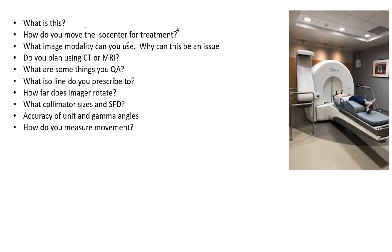What image modality can you use? You can plan on and use MRIs, but watch for geometric distortion, especially at the periphery. The Icon has a cone beam CT attached to it on this little arm right here. Do you plan using CT or MRI? MRI gives no heterogeneity correction, but since the brain is so close to water, that is okay, and there's only about six millimeters of skull. You can use MRI, you can use CT, or a combination of both. Know not just that you can use MRI, but why — because there's not much heterogeneity in the brain and the skull is so thin.